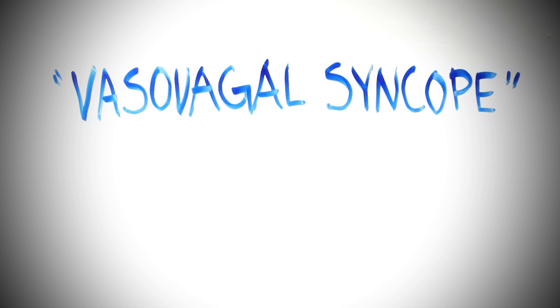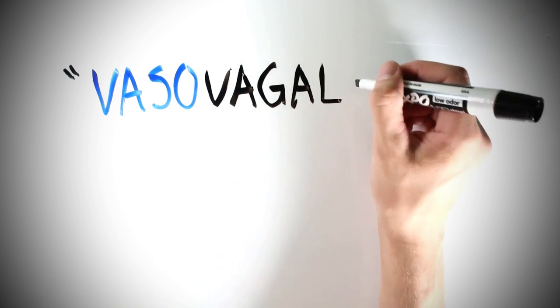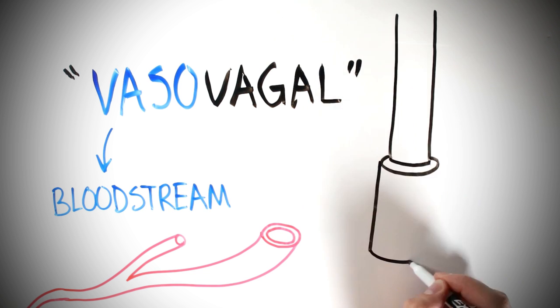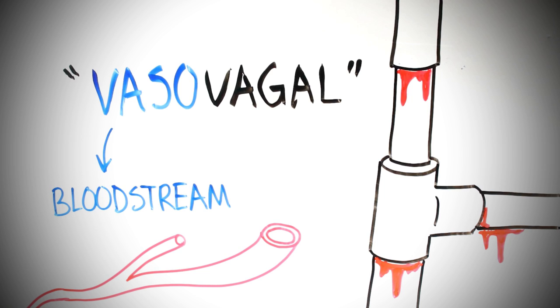Let's start by breaking down the words vasovagal syncope. Vaso pretty much just means your vascular system, which is your bloodstream. It's your blood vessels and stuff. Your internal plumbing of blood.